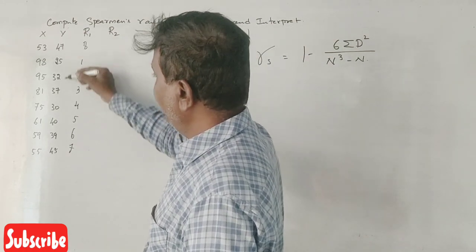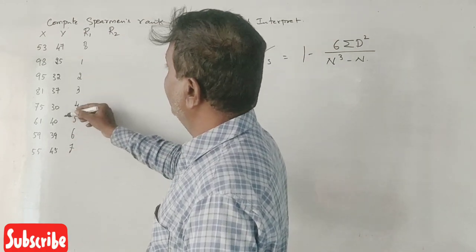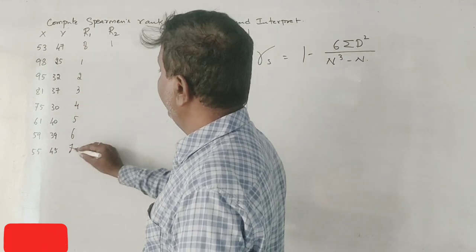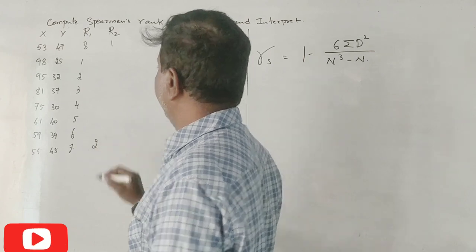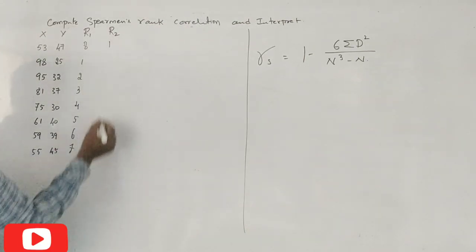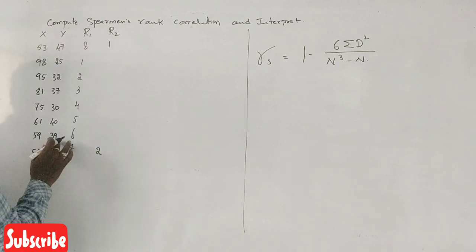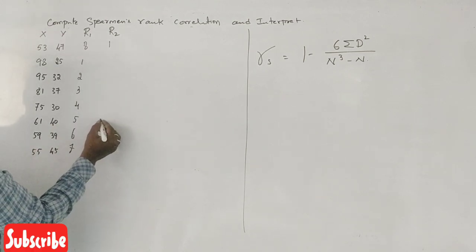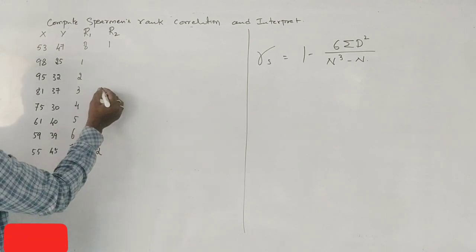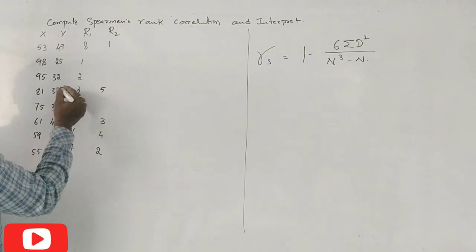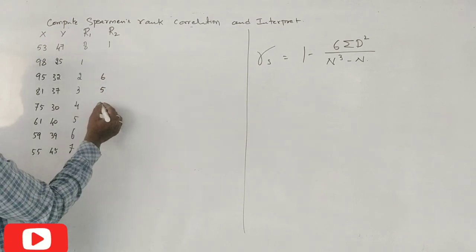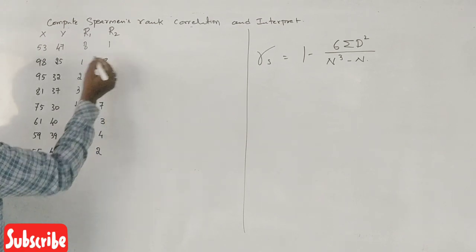You can see the highest marks. 47 — first rank. Next, 45 — second rank. 40 — third rank. 39 — fourth rank. 37 — fifth rank. 32 — sixth rank. 37 — fifth rank. 25 — eighth rank.